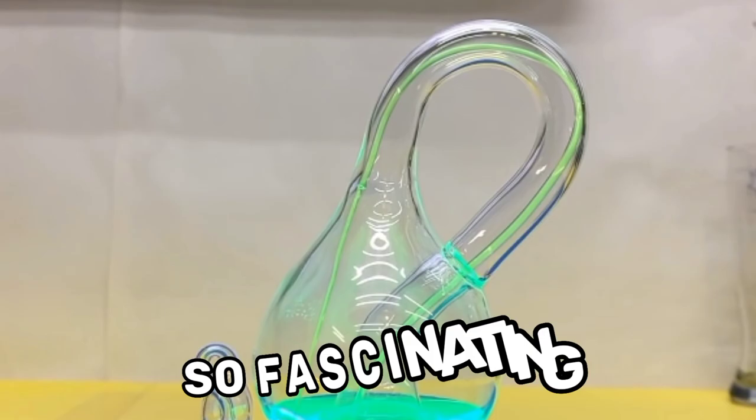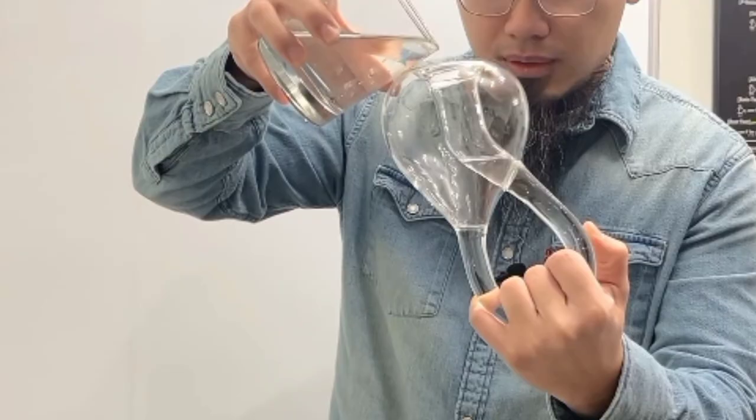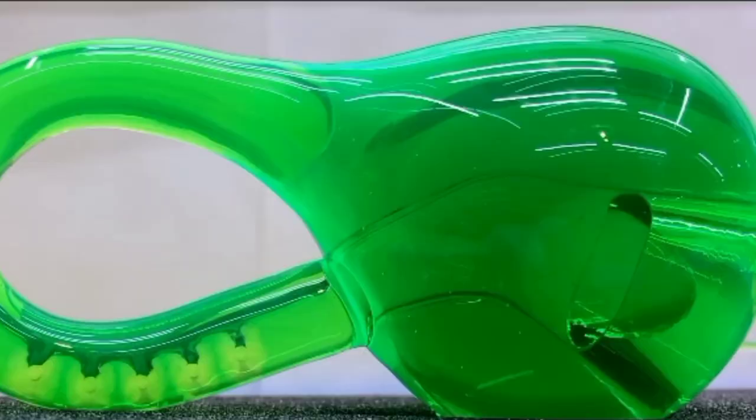The Klein Bottle exists in four-dimensional space, but it's challenging to visualize it in our three-dimensional world. Luckily, mathematicians have developed ways to represent it visually, like this 3D printed model you see here.